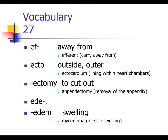Let's turn to vocabulary, picking up at number 27. You'll see and hear 'efferent' — we'll talk a lot about that when we get to the nervous system; it means something going away from. 'Ecto' refers to the outer layer — we'll actually talk about the ectoderm today. 'Ectomy' means to cut out, so appendectomy means to cut out the appendix. 'Edema' refers to swelling.